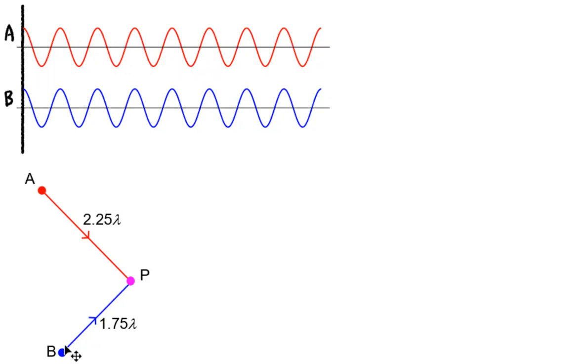So in a two-source interference, we have this idea called the path difference. So each source has to travel a different distance to arrive at the same point. And the difference in the path length is called the path difference. So if the wave sources start out in phase, that means at the instant the waves leave the sources, they are in phase.